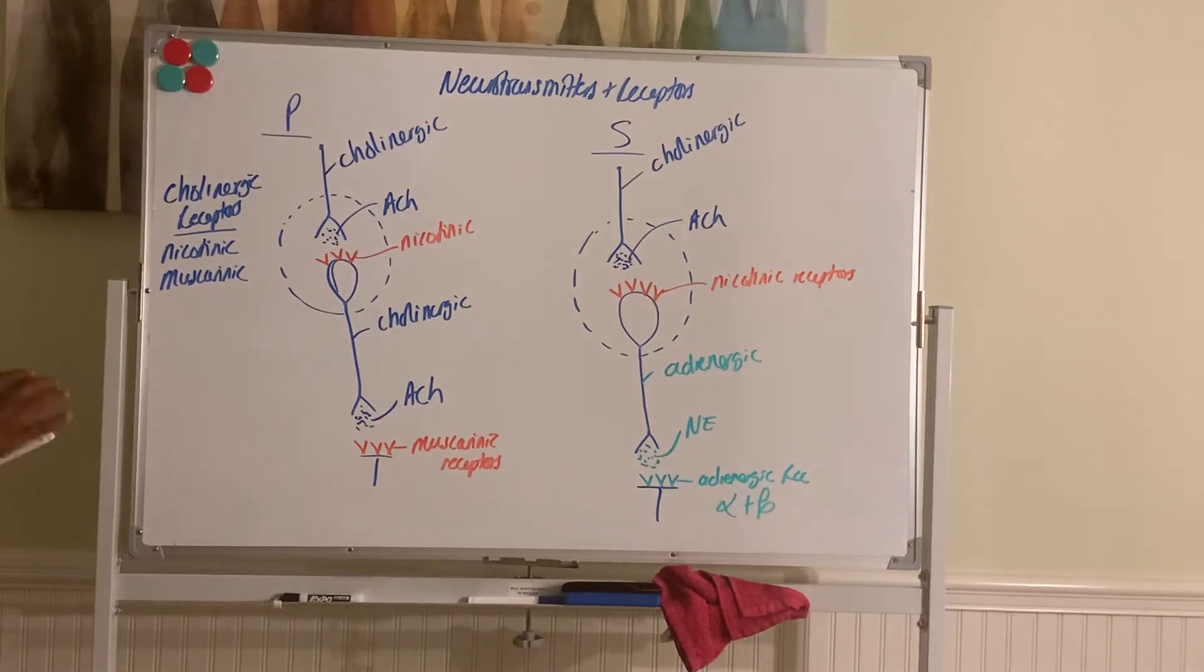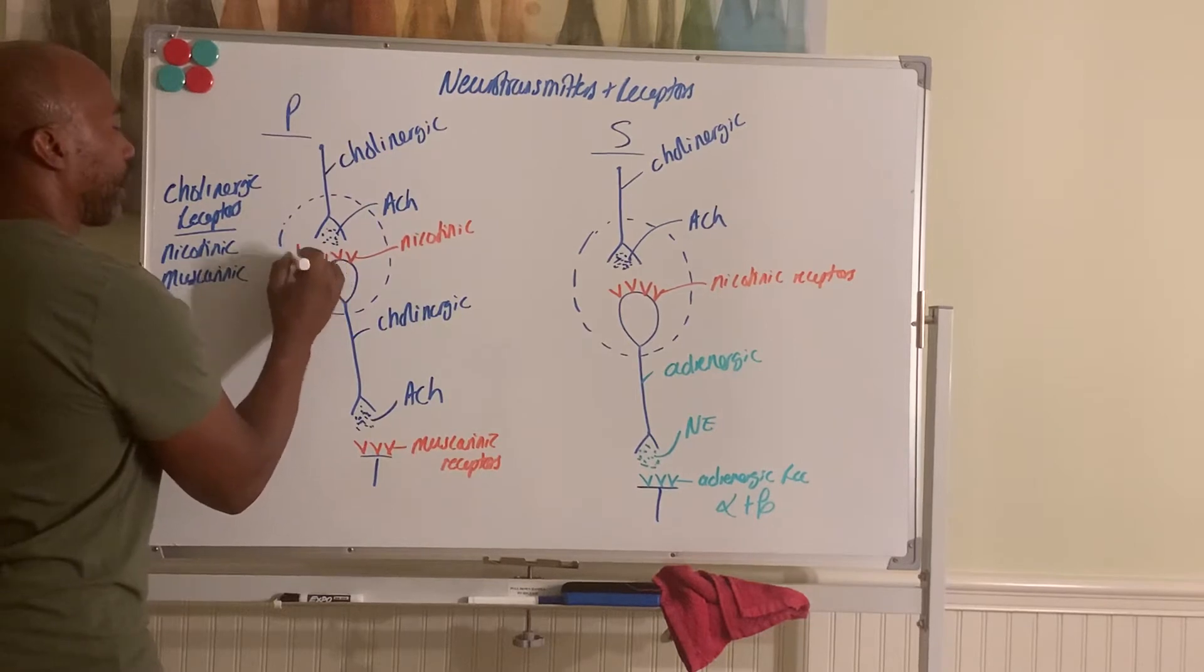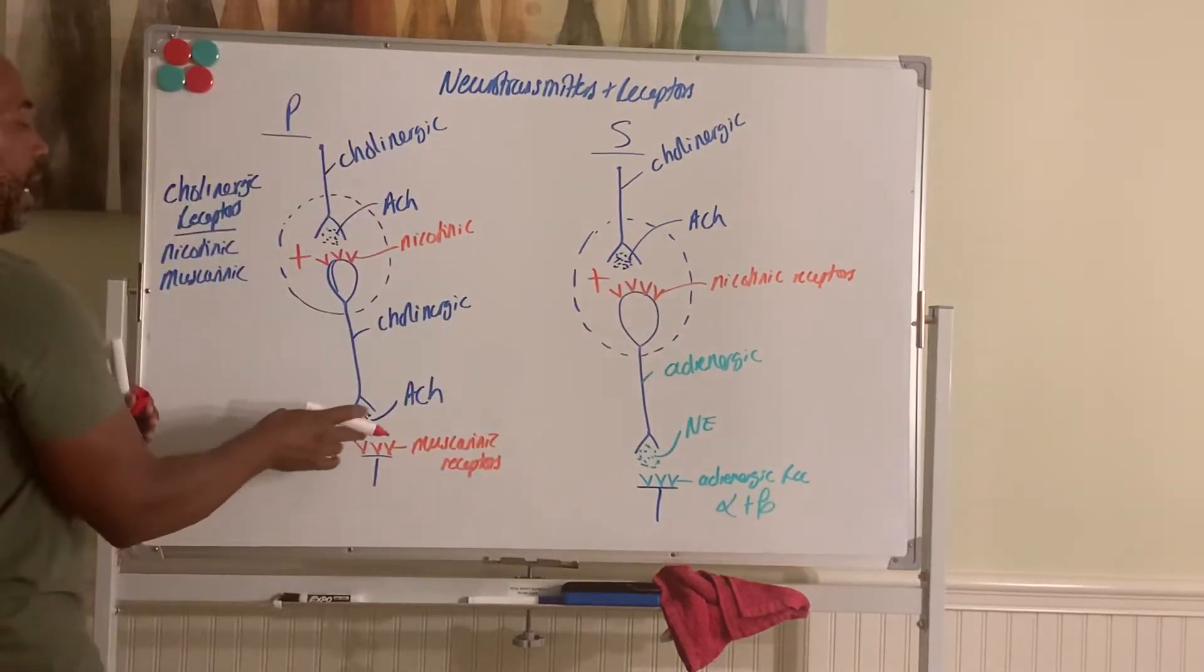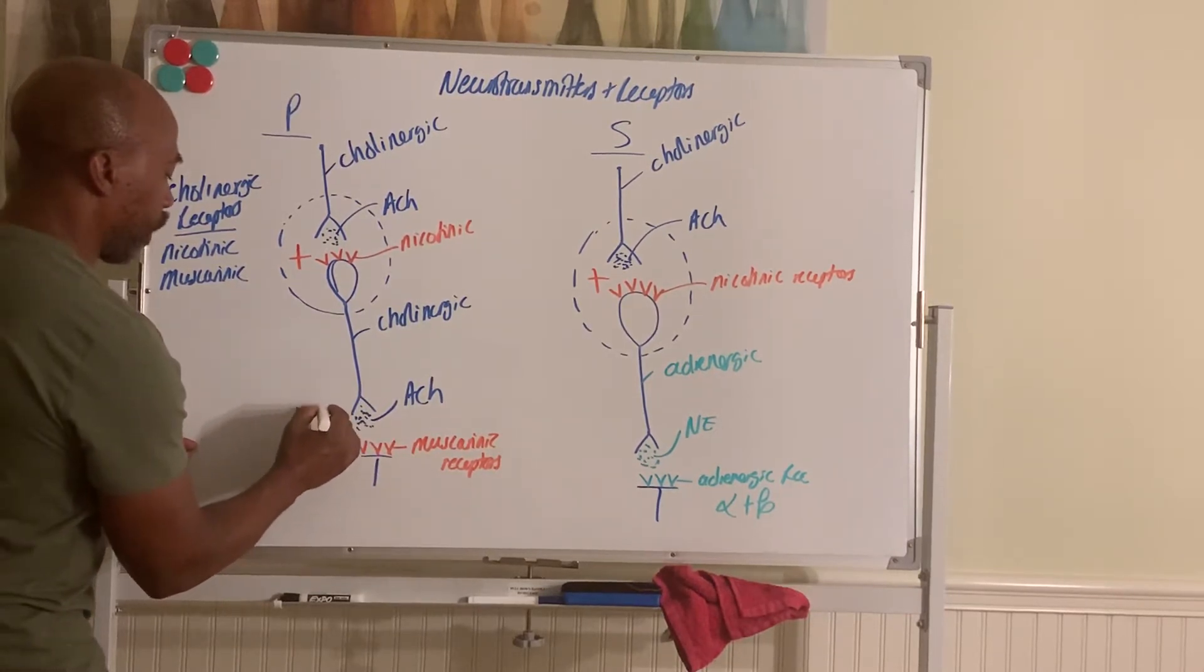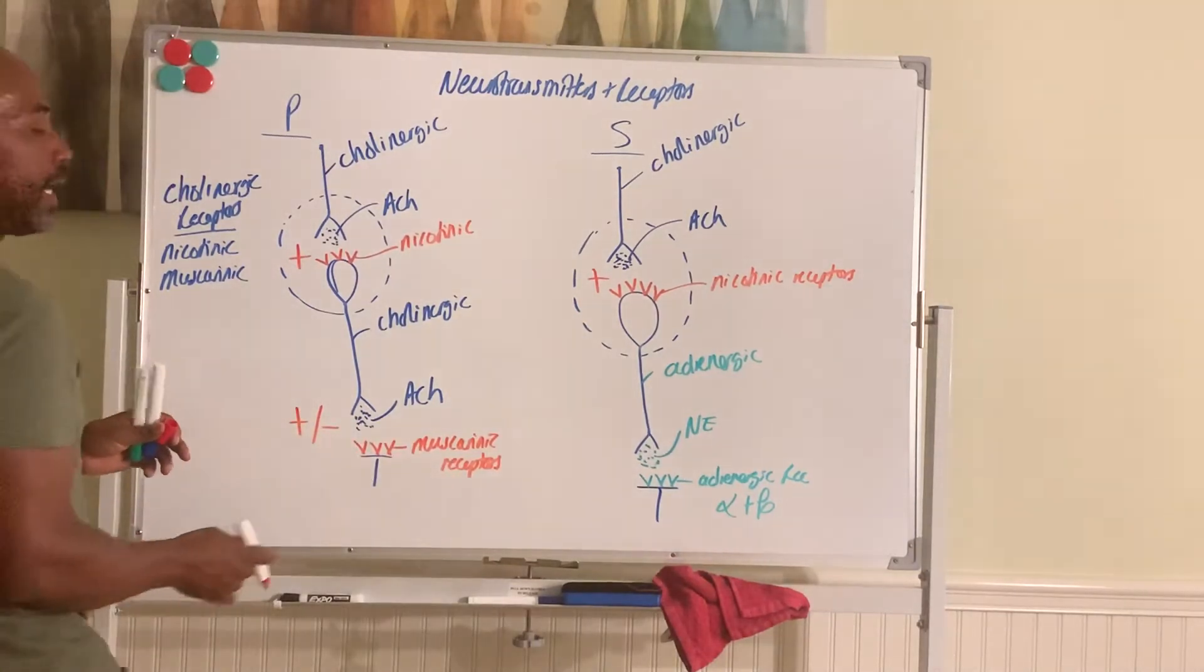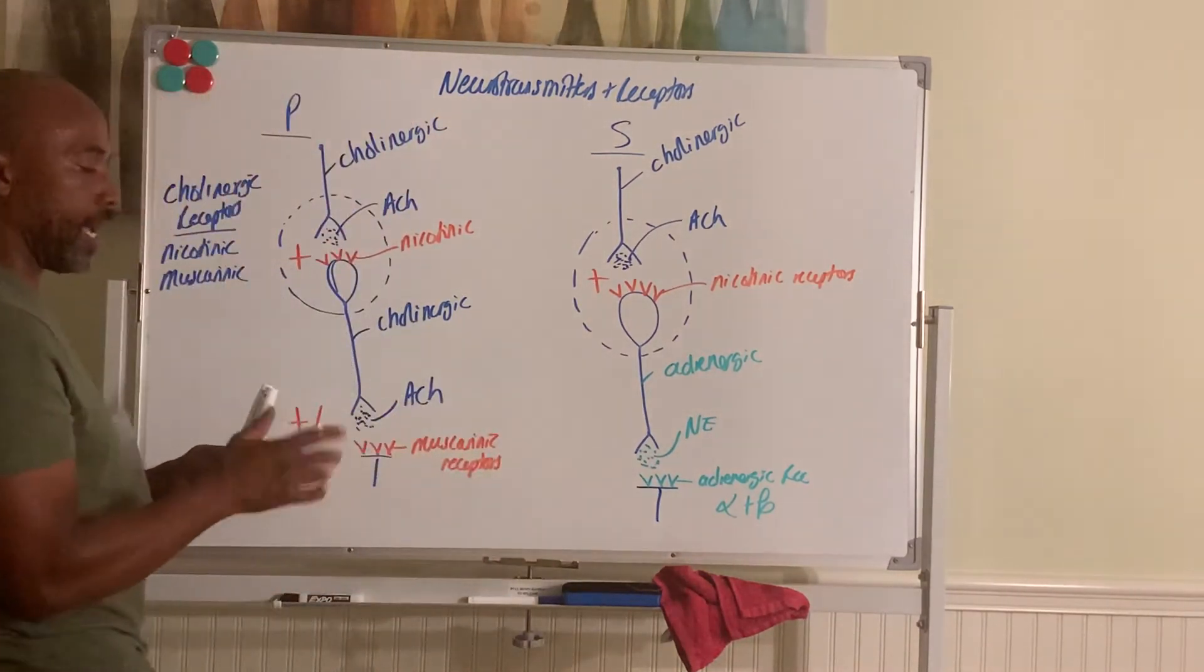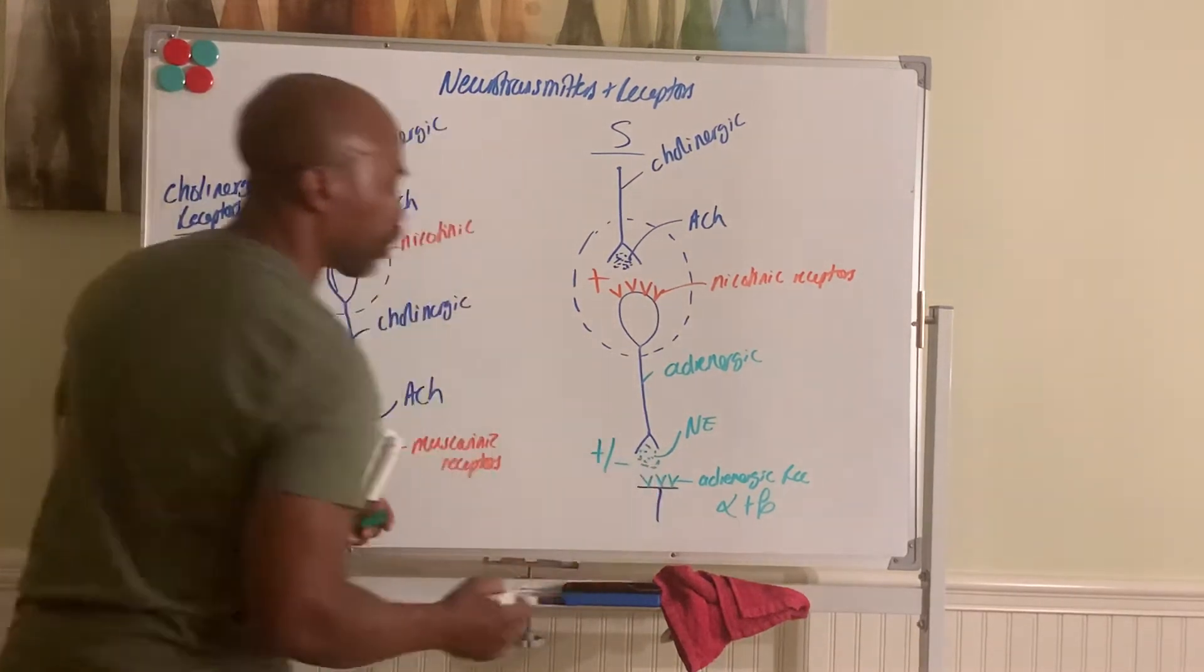Now, in terms of EPSP or IPSP's, always at your nicotinic receptors, the effect is stimulatory. So always stimulatory there. At the muscarinic receptors, it can be either way, stimulatory or inhibitory, depending on the subtype of muscarinic receptors that you have. And same is true here. For the adrenergic receptors, adrenergic receptors can be positive or inhibitory.